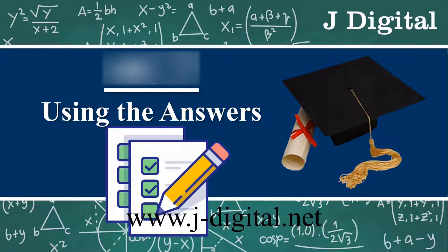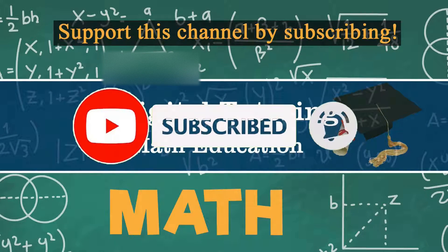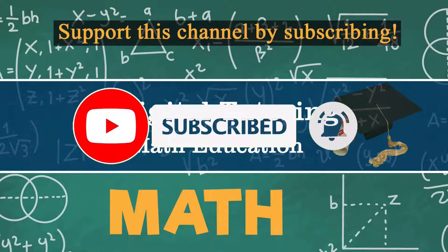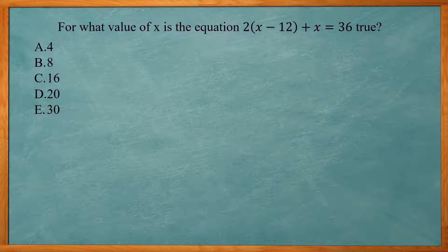In this video, I'm going to show you how you can use the answers to help you solve the math problems on the ACT. So this one reads, for what value of x is the equation 2 times the quantity x minus 12 plus x equals 36 true.